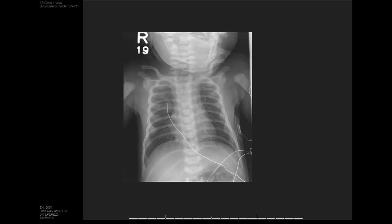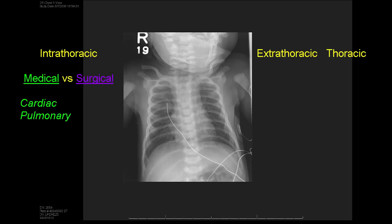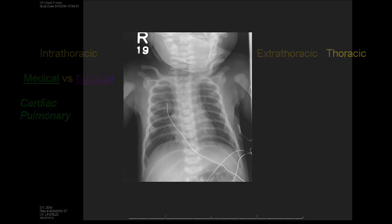My old boss, Dr. Poole, used to categorize neonatal respiratory distress into extrathoracic causes, thoracic causes, and intrathoracic causes. Obviously the most common thing we deal with is the intrathoracic causes, and then she would divide those into medical disorders and surgical disorders. You can subdivide medical into cardiac and pulmonary. That's the approach we're going to have — the most important thing is to try and ballpark it into one of those areas.